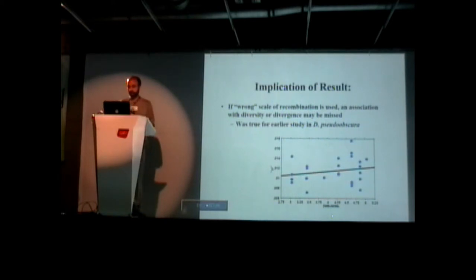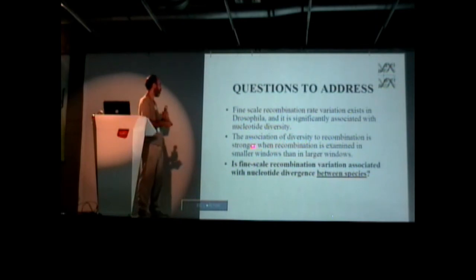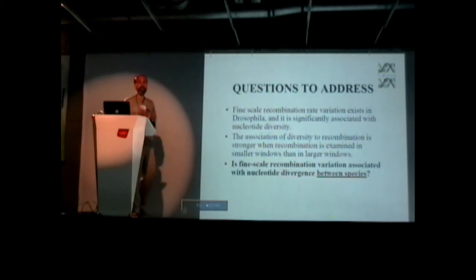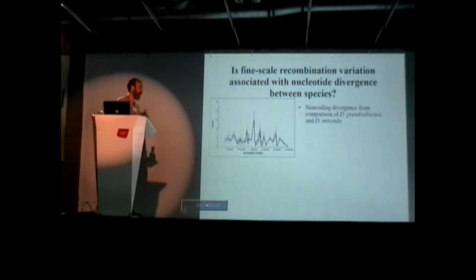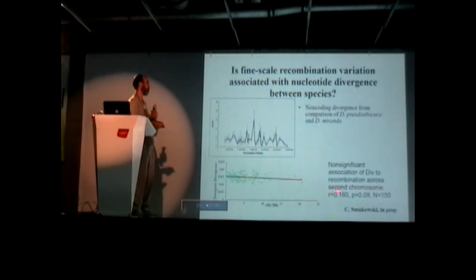You really need precise estimates to be able to see it. So we see an association with diversity to recombination rate and it's strongest when recombination is examined in very small windows, at the level of hotspots. Is fine-scale recombination variation associated with nucleotide divergence between species? We looked at the divergence between D. pseudoobscura and D. miranda. And the answer is no — we see a non-significant association.